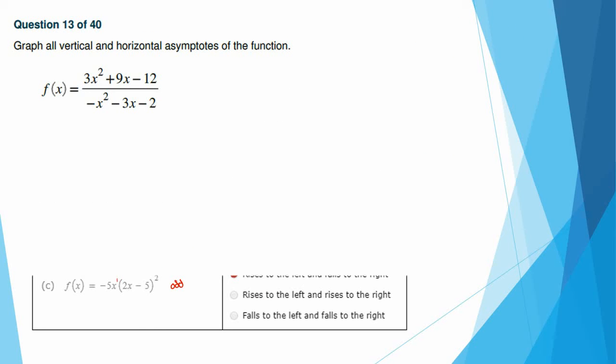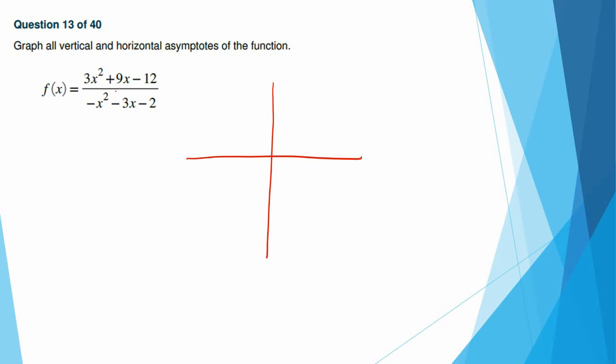Here we want to graph all the vertical and horizontal asymptotes of this function. So vertical asymptotes. The first thing we've got to do is we've got to factor. So we're going to factor this as 3 times x squared plus 3x minus 4 over negative x squared plus 3x plus 2. The reason I did that is because I want that minus sign out front, so I have this positive.